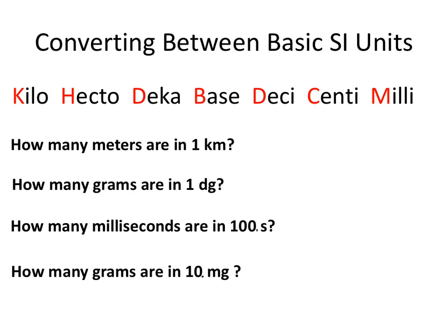We can remember this order using the mnemonic either 'Kevin hates dates because dates cost money' or 'King Henry died by drinking chocolate milk.' These mnemonics help you remember the order of all the various prefixes. Now, how would we utilize this to interconvert between one unit of measurement and another version of that unit?